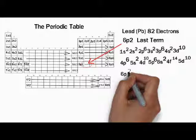Therefore, the complete electron configuration of lead is 1s² 2s² 2p⁶ 3s² 3p⁶ 4s² 3d¹⁰ 4p⁶ 5s² 4d¹⁰ 5p⁶ 6s² 4f¹⁴ 5d¹⁰ 6p².